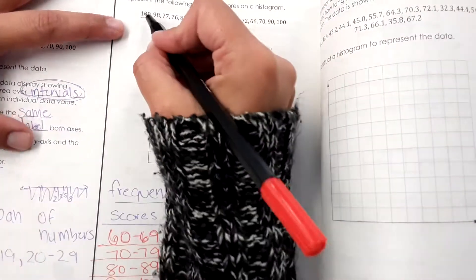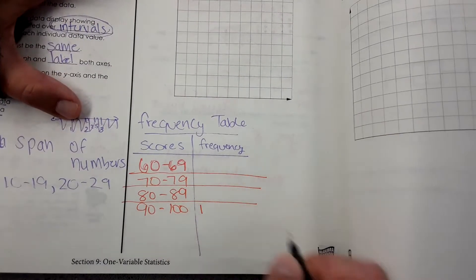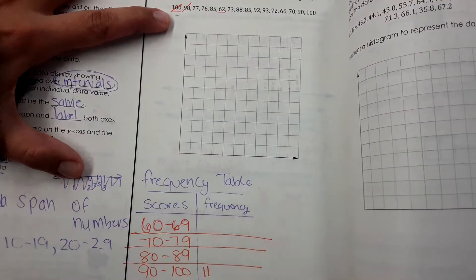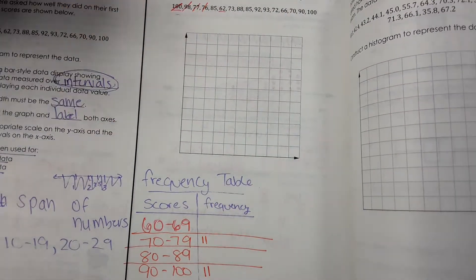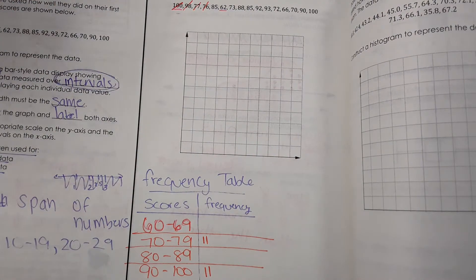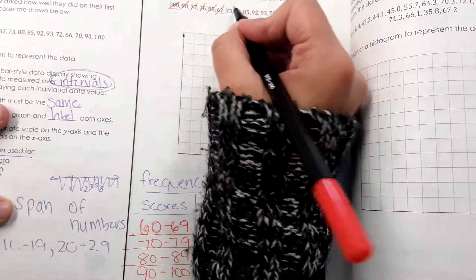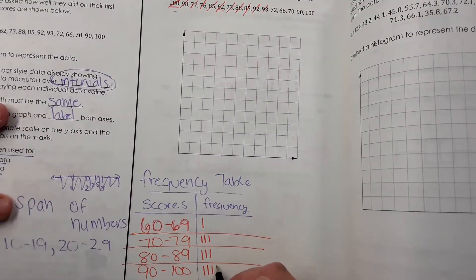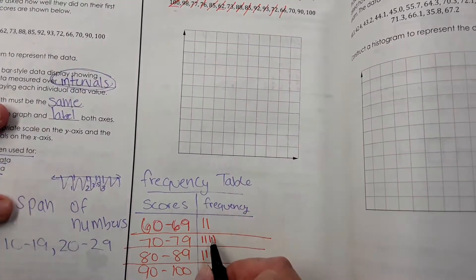So what I'm going to do is go through each of these numbers and tally it on my frequency table. So 100 would fall in this column, so I mark one there. Then 98 would also fall in that column. 77 and 76, so that's two in this column. Have you done this before? Then 85, one here. 62, 73, 88, 85. Thank you, Grace, for being so calm today. I appreciate it.